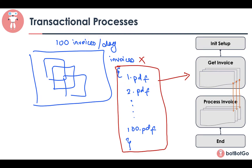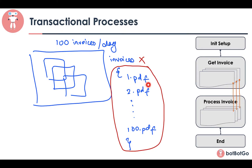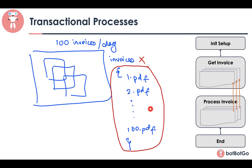What happens is each invoice will be processed one at a time. When you go from the Get Invoice state to the Process Invoice state, instead of passing the entire list, you pass just the name of the first invoice file. Once the first PDF is processed, you go back to the Get Invoice state, then process the second PDF file, and keep following this back and forth until all the invoices have been processed. If any of the invoices fails or is faulty, the bot will just ignore that particular file and move back and proceed with the next transaction.